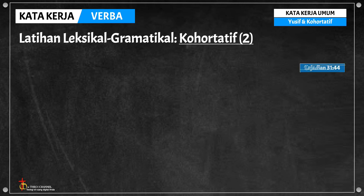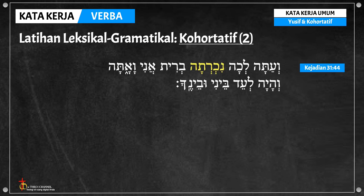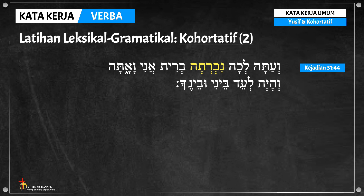Contoh berikutnya dari Kejadian 31 ayat 4 dan Ezra 10 ayat 3: ada kata nikrata dan nikrat. Kita dapat mencoba menganalisis (parsing) kedua kata ini untuk menentukan apakah bentuknya adalah Yusif atau Kohortatif. Anda boleh mencantumkan jawaban di kolom komentar.